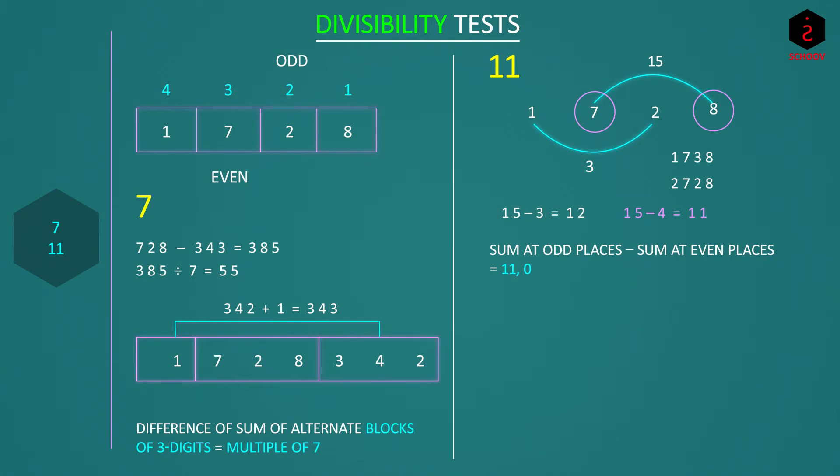Let us see one more method for 11. We make blocks of 2 starting from right and add them. So in 1728, these are the blocks of 28 and 17. And the sum is 45. If 2 numbers are not available, we take the last number. For example, in 172, blocks will be 72 and 1, and their sum is 73. Remember to make blocks starting from right only. Now neither 45 nor 73 are divisible by 11. So this test for 11 is, sum of blocks of 2 digits must be divisible by 11.